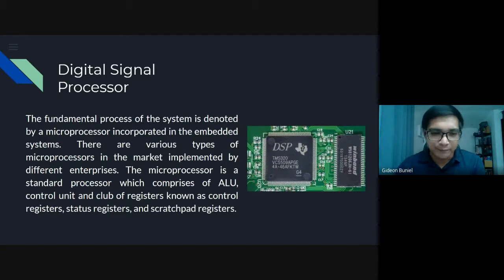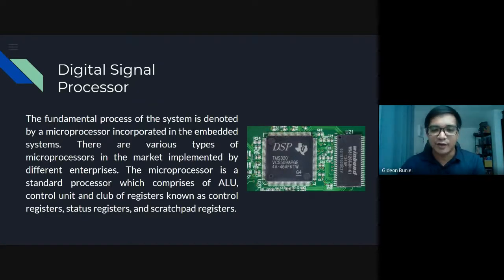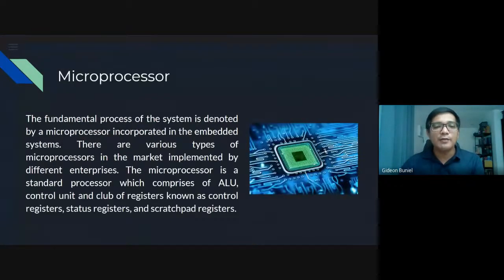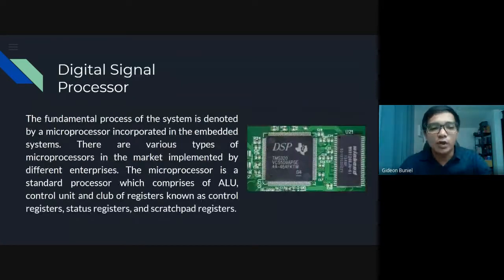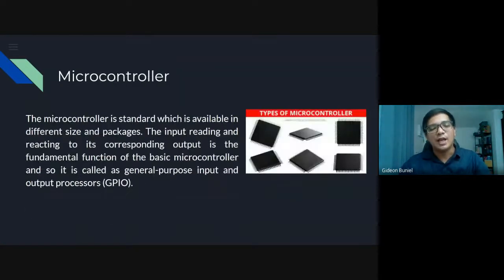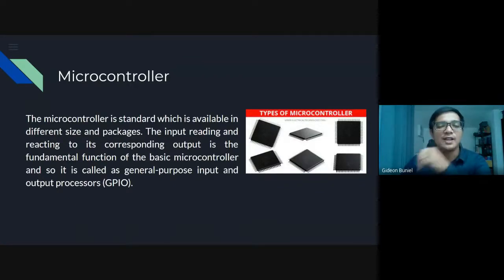Next, digital signal processor. The fundamental process of the system is denoted by a microprocessor incorporated in the embedded systems. There are various types of microprocessors in the market implemented by different enterprises. So for processors, we have microprocessor, embedded processor, and digital signal processor — you have to remember those types of processors. When we conduct a quiz or exam, you just have to read through this material.